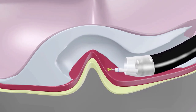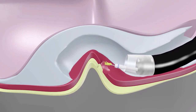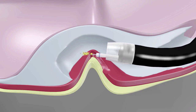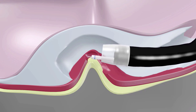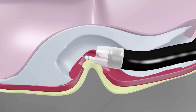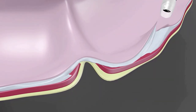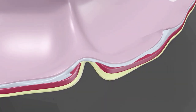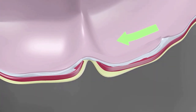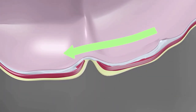After the submucosal tunnel, we perform the Stricturotomy, cutting the residual scar tissue and the involved muscular fibers. After the Stricturotomy, the stricture is no longer visible, allowing the passage of food and fluids.